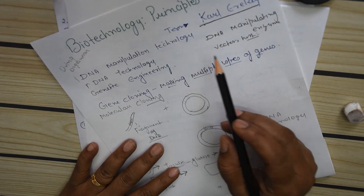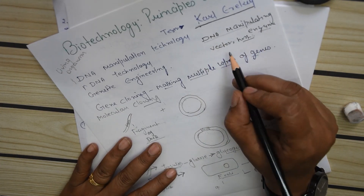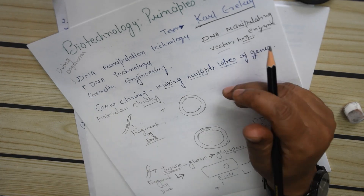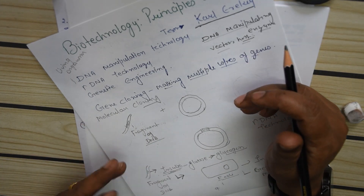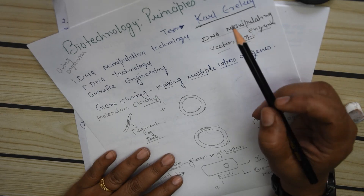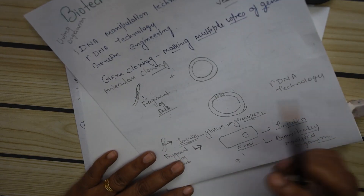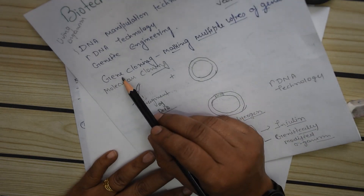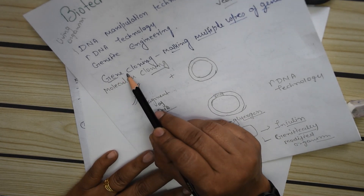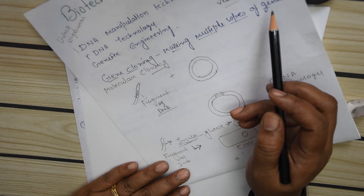In this chapter you are going to study about components of gene cloning. Components of gene cloning include DNA manipulation enzymes, vectors, and the host. In the later part you will study about PCR, that is polymerase chain reaction. So the question arises: what is gene cloning? Gene cloning means making multiple copies of genes.